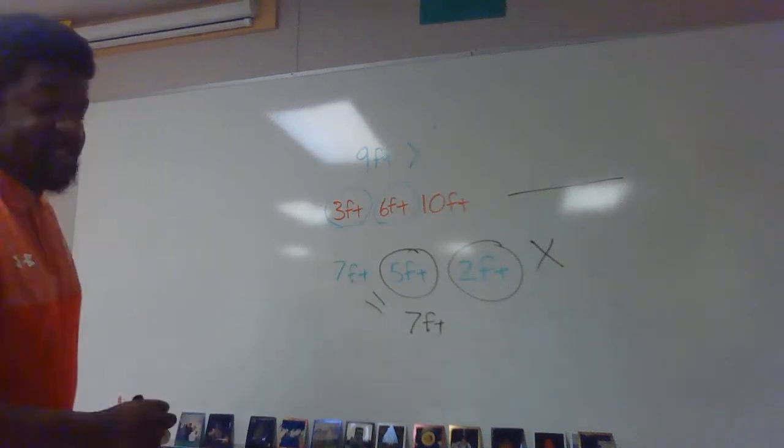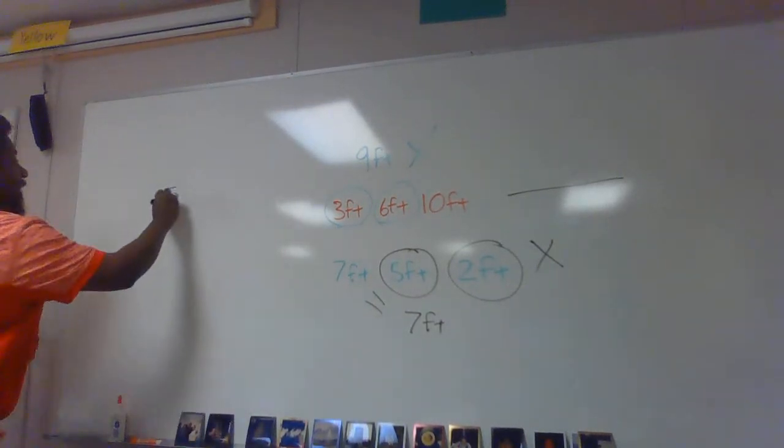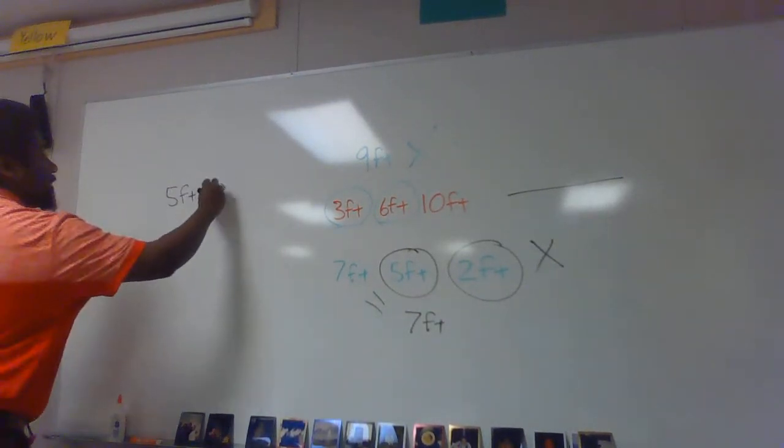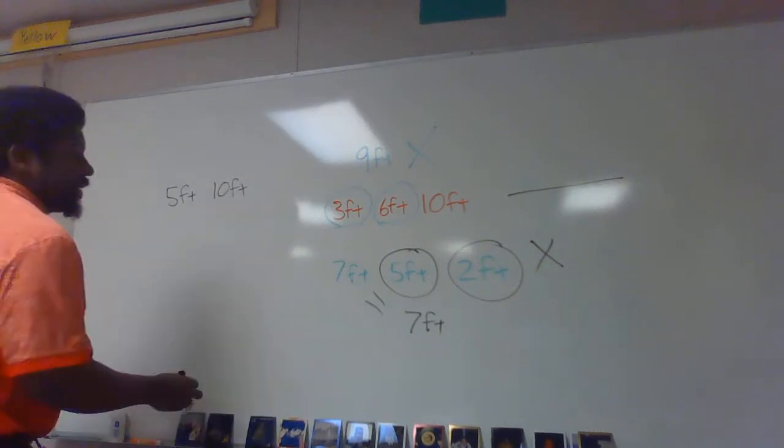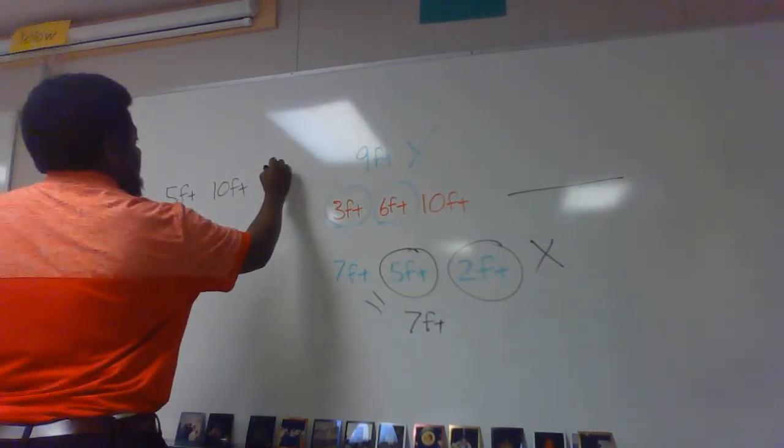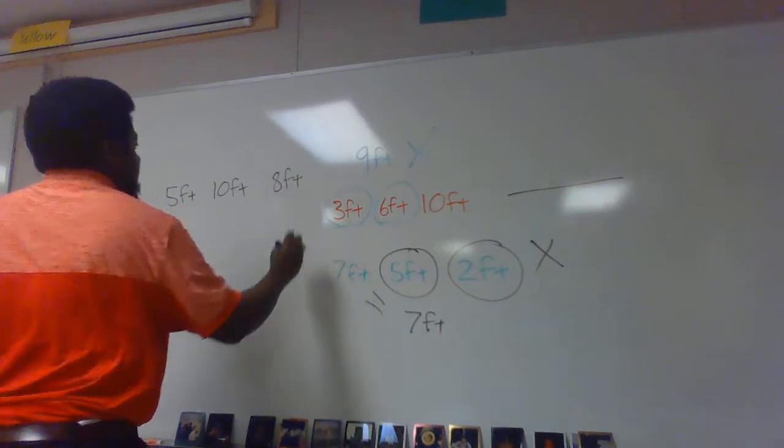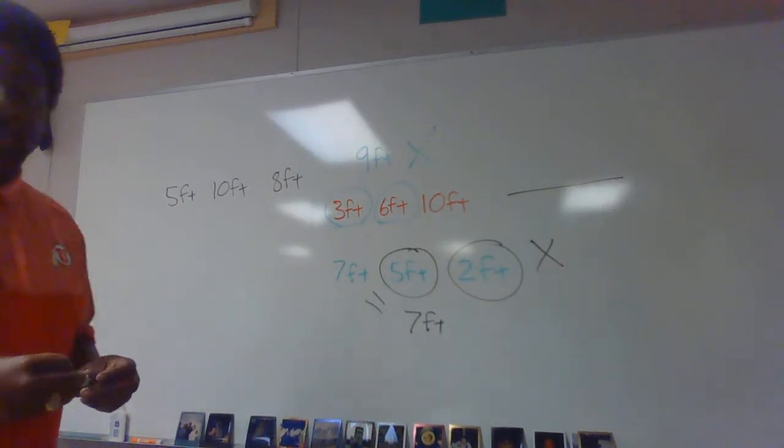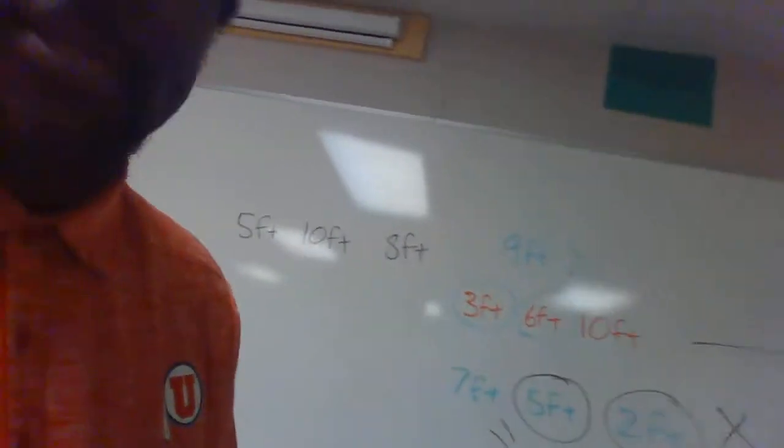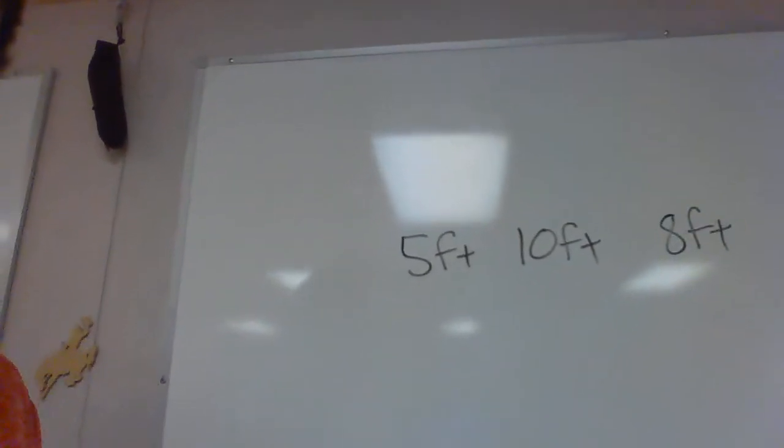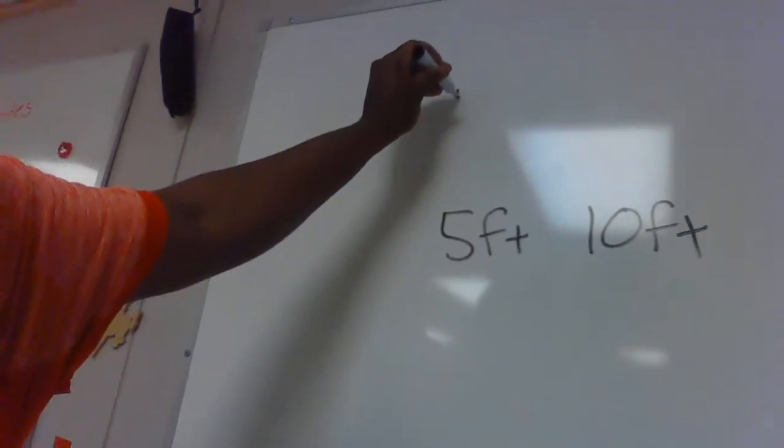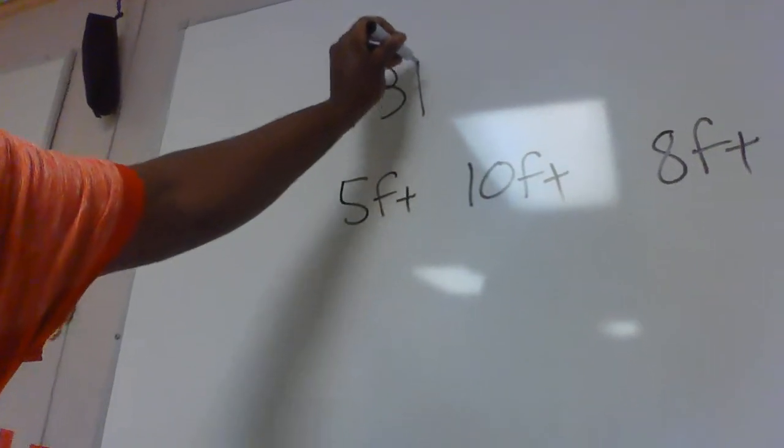One final example, let's say I had 5 feet, 10 feet, and 8 feet. On this one my smallest are 5 feet and 8 feet. Since 5 feet plus 8 feet is 13 feet,